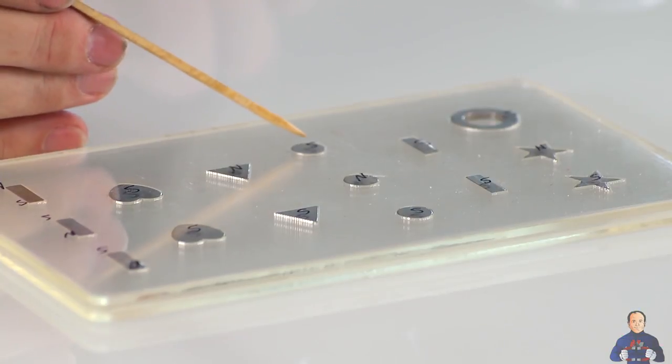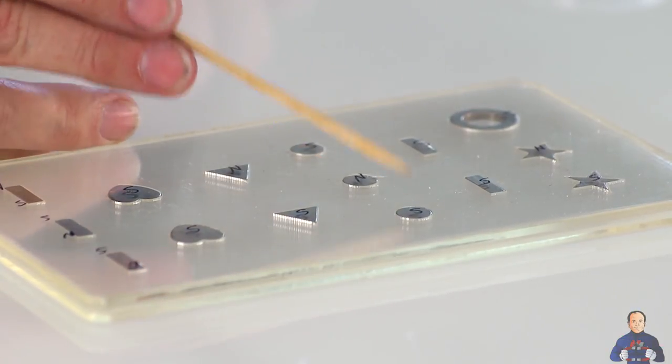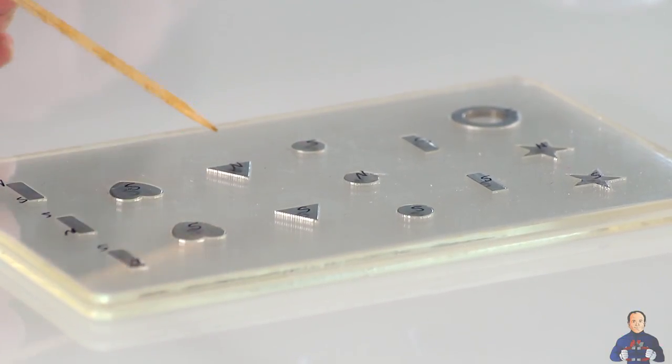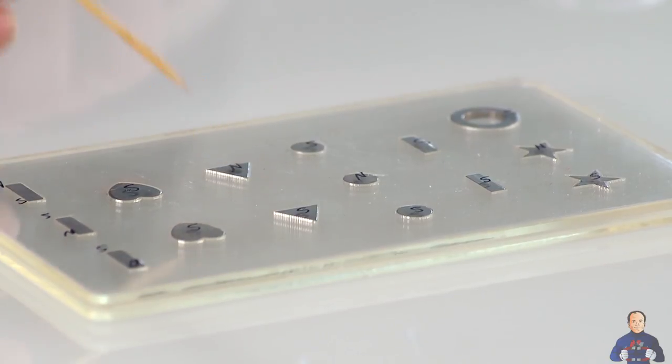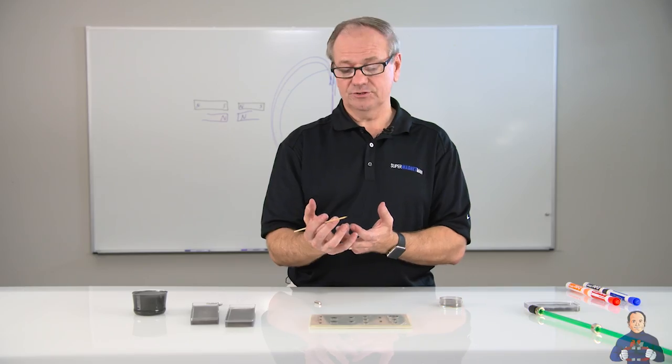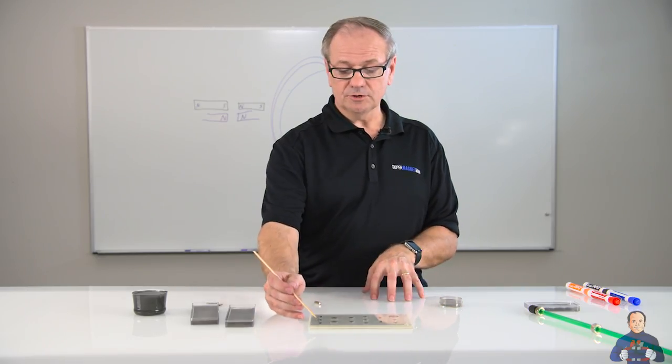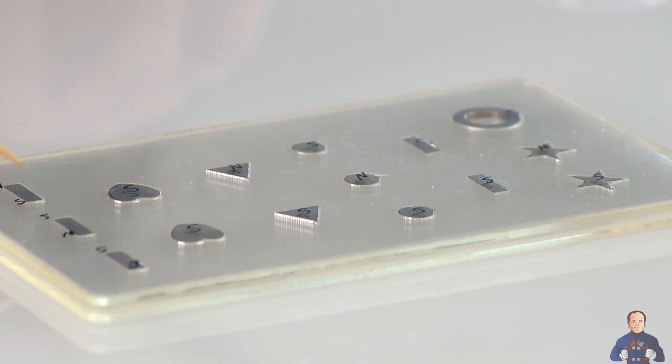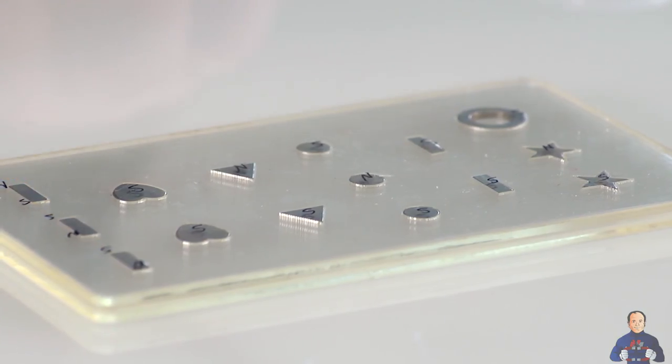In the middle, I've got disc magnets with a south, north, south. Those attract each other. Then we've got a north and a south on our triangle magnets. We have two heart magnets. Both of those have the south pole facing up. On these rectangles on the end, they go north, south, north, south, south, north. So you can see we have two that attract and two that repel.